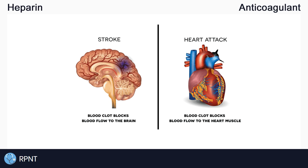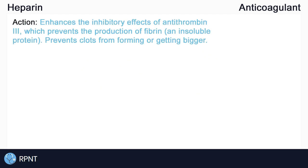Heparin inhibits certain coagulation factors in the blood. Coagulation factors are proteins that control how much our blood clots. Specifically, heparin enhances something called antithrombin-3, which inhibits the coagulation factors 2a and 10a. By inhibiting these coagulation factors, antithrombin-3 helps to prevent clotting by working against thrombin. Thrombin is a clotting enzyme that eventually leads to the production of fibrin, which is essential to clotting.